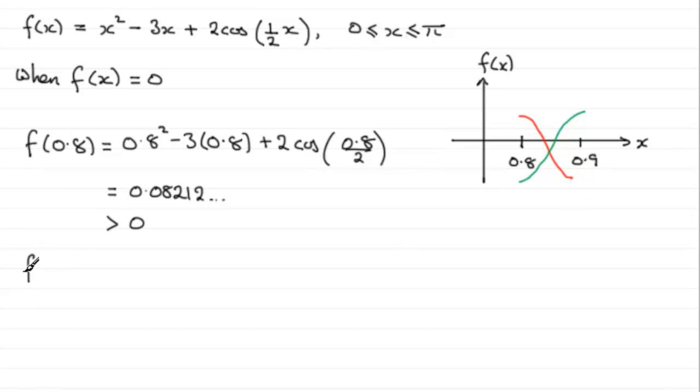So f(0.9), in the same way, just feed it through this equation. If you do that on your calculator, you will in fact get a negative number: -0.08910 and so on. So this is less than 0.